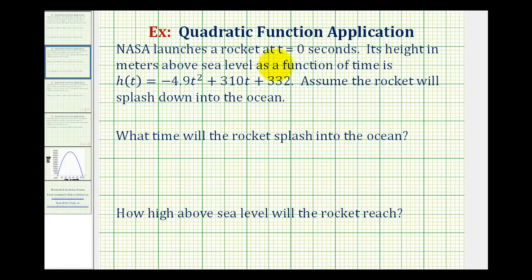NASA launches a rocket at t equals zero seconds. Its height in meters above sea level as a function of time is given by the function h of t. We will assume the rocket will splash down into the ocean. We want to answer two questions.